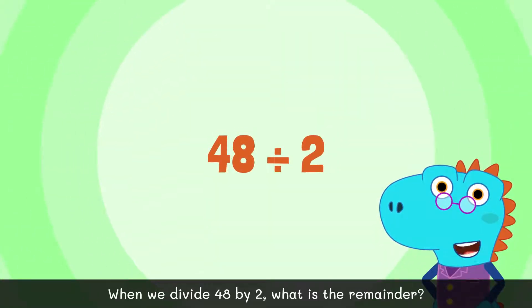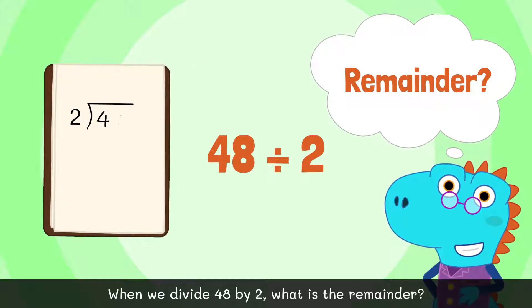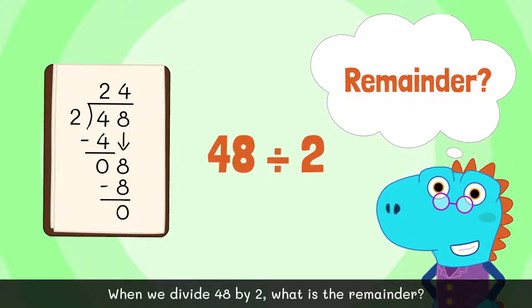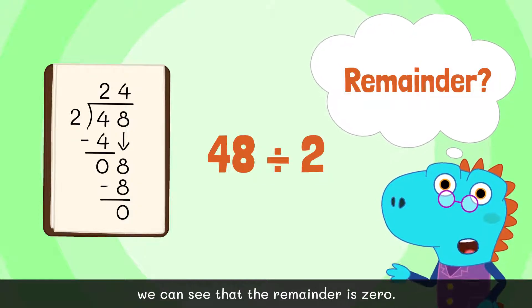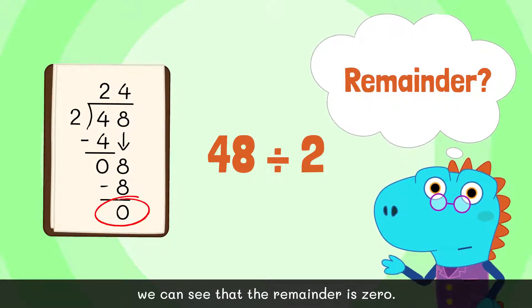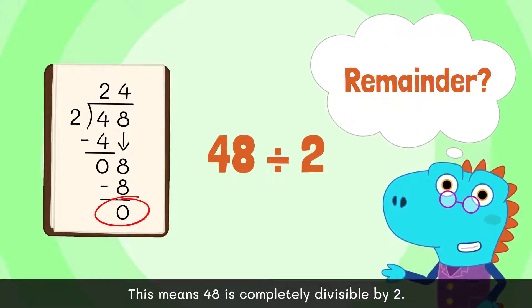When we divide 48 by 2, what is the remainder? After solving this problem with long division, we can see that the remainder is 0. This means 48 is completely divisible by 2.